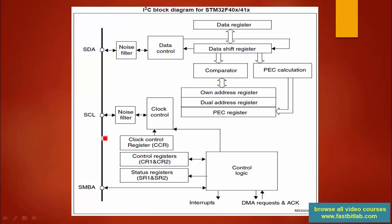Here you can see that we are mainly interested in the SDA and SCL pins of the I2C peripheral. It also supports the SMBA protocol, but that protocol is not discussed in this course. There are two pins coming out of this peripheral — one is SDA and the other is SCL — both preceded by a noise filter used to remove glitches or spikes and to smoothen the SDA and SCL signals.